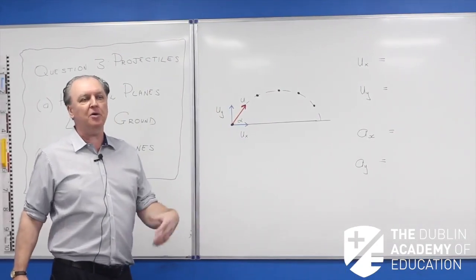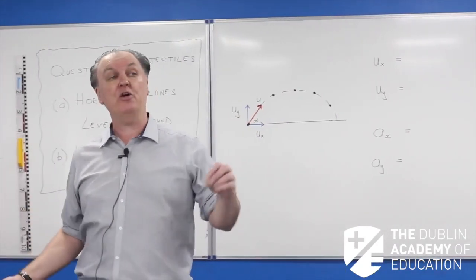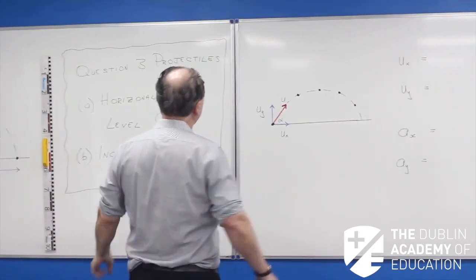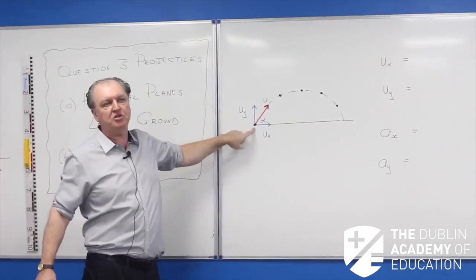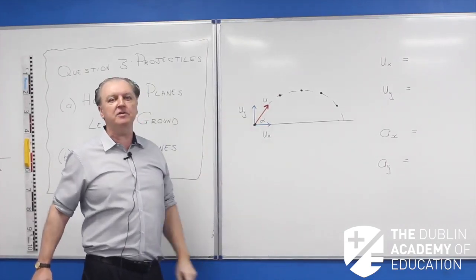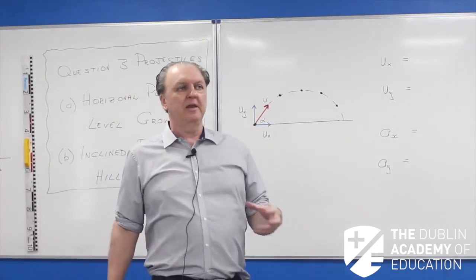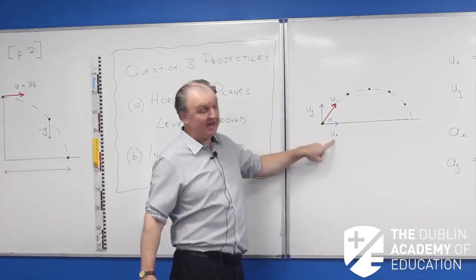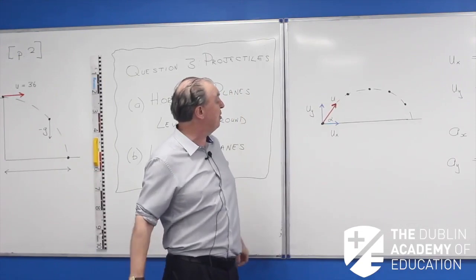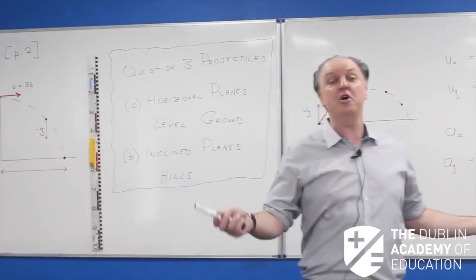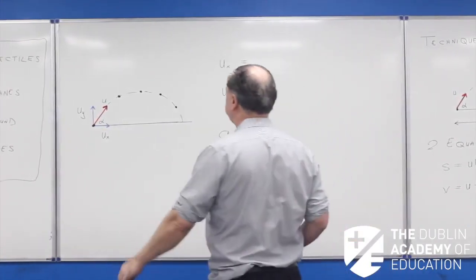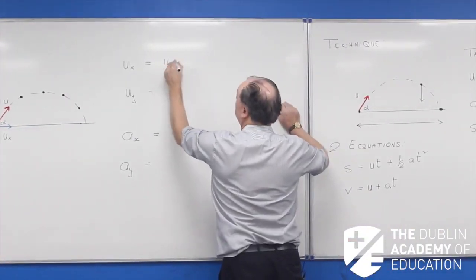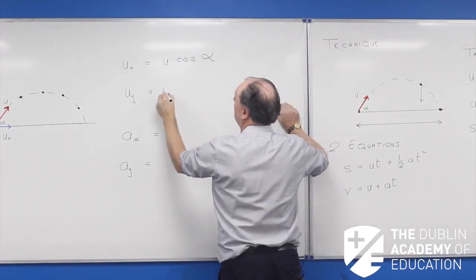When we talk about a missile, we're not talking about something with an engine — just throwing something, like a tennis ball through the air. Here's my point of launch. I fire my tennis ball and it's given an initial velocity U. I can break U up into a horizontal component Ux and a vertical component Uy. If the angle of launch is alpha, then Ux equals U cos alpha, and Uy equals U sin alpha.